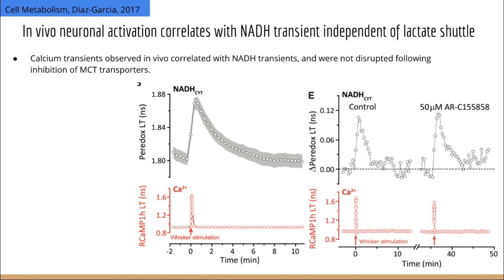To carry these findings to the live animal, they observed calcium and NADH transients in awake functioning mice by opening their cranium and imaging their barrel cortex with a two-photon microscope following whisker flicks. Whisker flicks cause a very predictable pattern of activation in the barrel cortex. They observed both calcium and NADH transients that were not responding to lactate import inhibition by ARC155858 — inhibiting lactate import in the live animal showed no decrease in the Paradox signal.